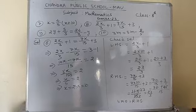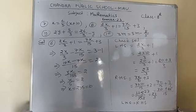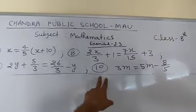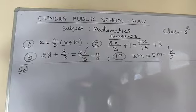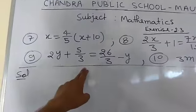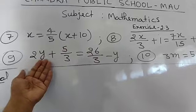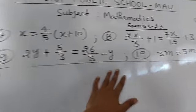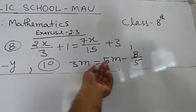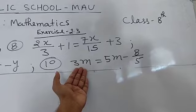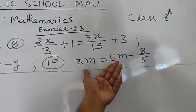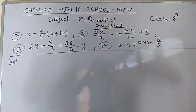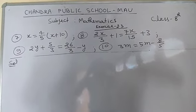That is the complete solution of question number 8. Now students, question number 9 and question number 10 are written here. They are similar to the previous questions — send variable terms to one side, numerical values to the other, find the values of y and m respectively, and check the solution. These last 2 questions you need to do by yourself as homework. Thank you, students.